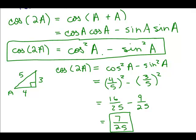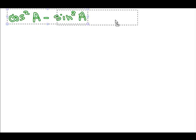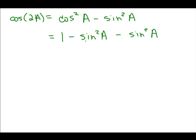Cosine of 2A equals cosine squared A minus sine squared A. I can rewrite cosine squared A as 1 minus sine squared A from the Pythagorean identity, or I could write sine squared A as 1 minus cosine squared A. Taking cosine squared A and writing it as 1 minus sine squared A, and combining with the minus sine squared A term, I get 1 minus 2 sine squared A. That's another formula for the cosine of 2A.